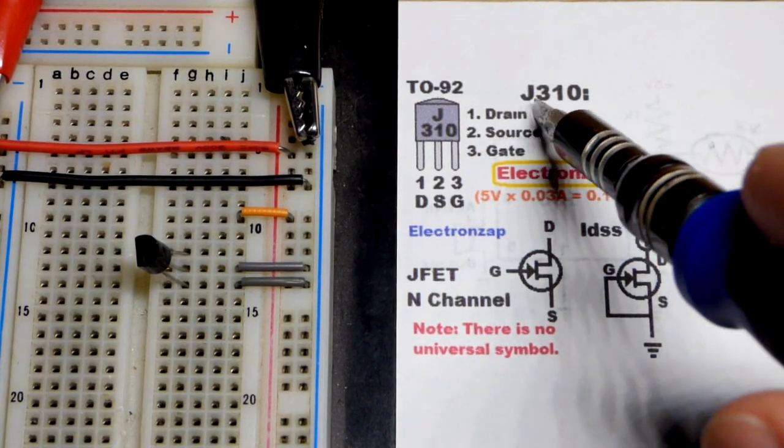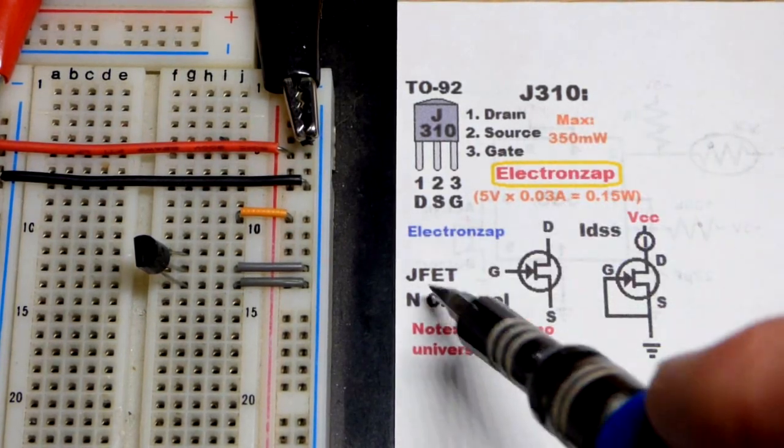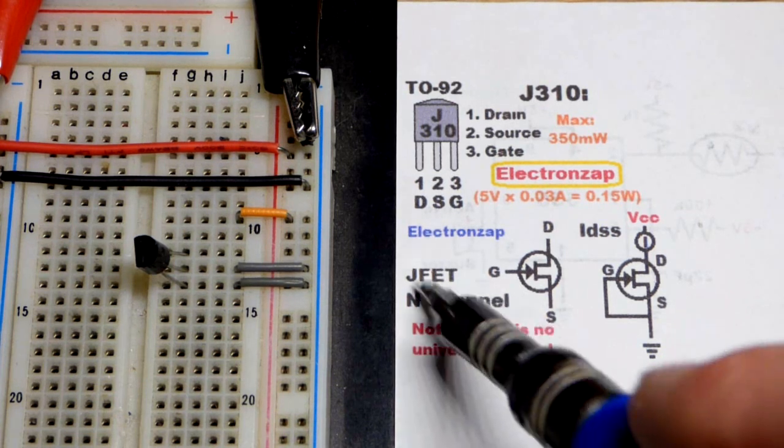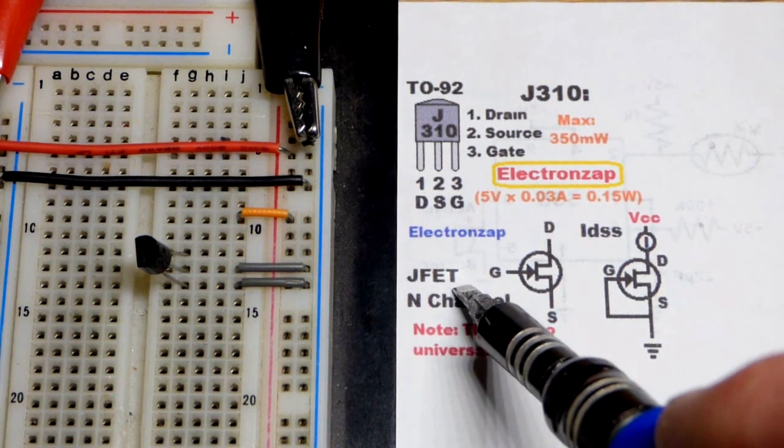So now in this video, we're going to introduce the J310 transistor. It is a JFET, an N-channel JFET. That's junction field effect transistors.